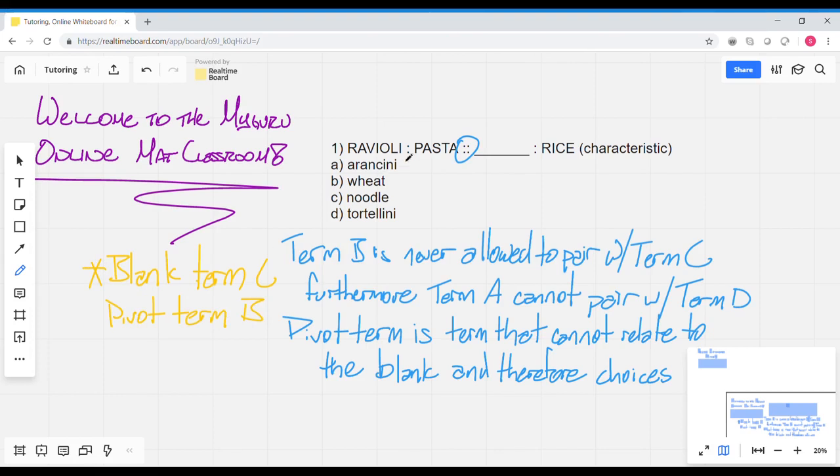So what we do is we come up to pasta because pasta has to be the pivot term. And we know that we're either going to relate ravioli to pasta or pasta to rice. We don't have to consider pasta against the answer choices.